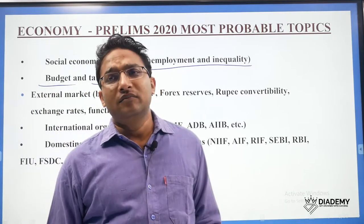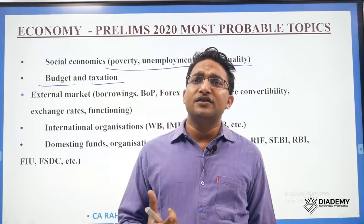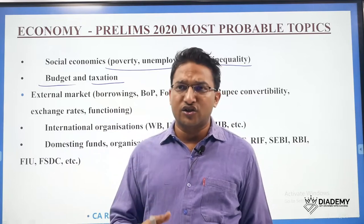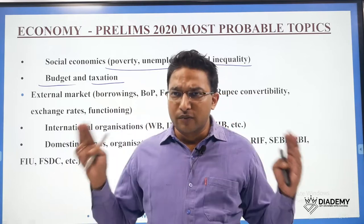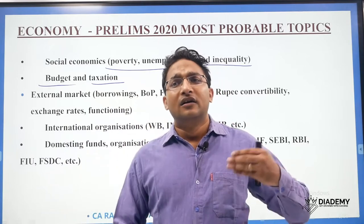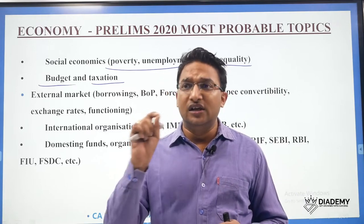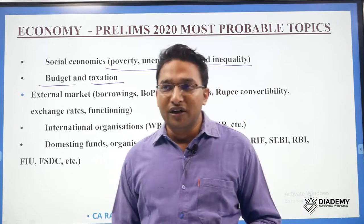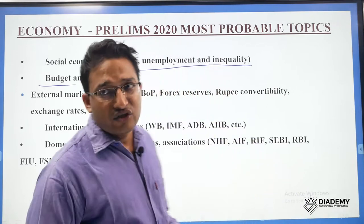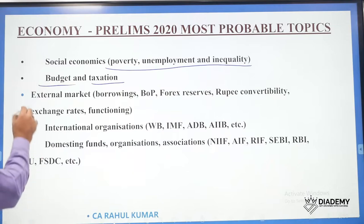For budget and taxation, cover different types of budgets — capital budget, revenue budget — and revenue items, capital receipts, disinvestment receipts, interest, and all those budgetary terms. In taxation, you should always go through the GST and the latest developments in the GST.